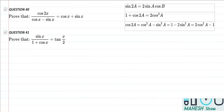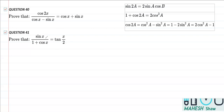Now that we are done with the first one, let's see how we can do the next one. In this case we have sin x over 1 plus cos x is equal to tan x by 2.